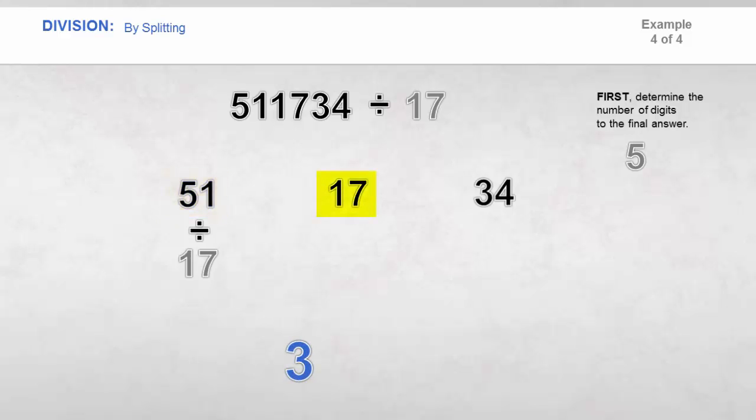51 divided by 17 is equal to 3. Then divide 17 by 17, which is equal to 1. Because this is not the leftmost part, there are two digits here. The result must also contain two digits. So add a zero to the left.